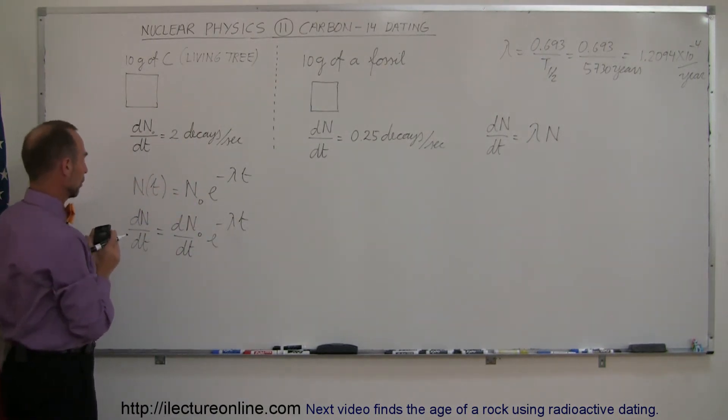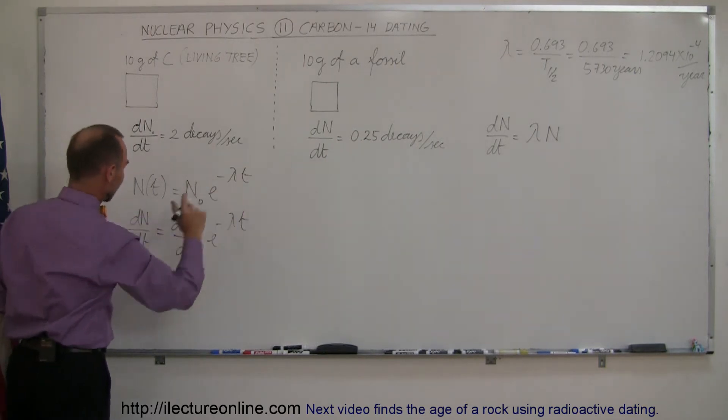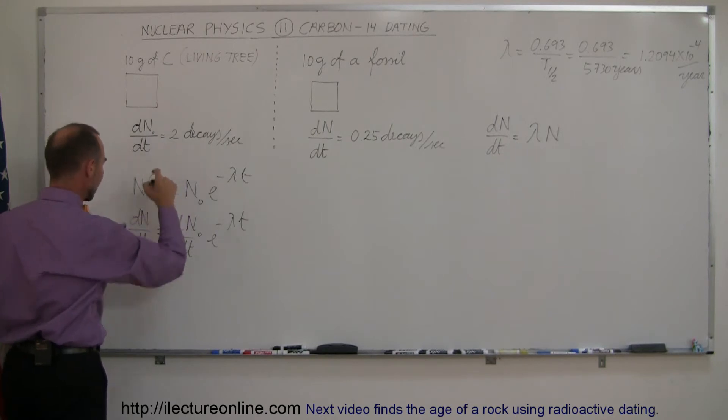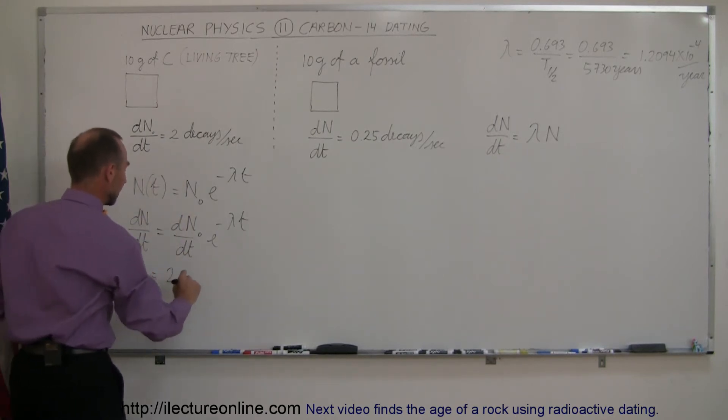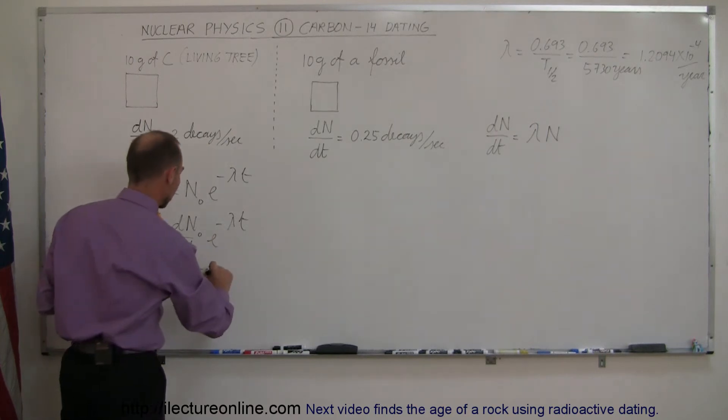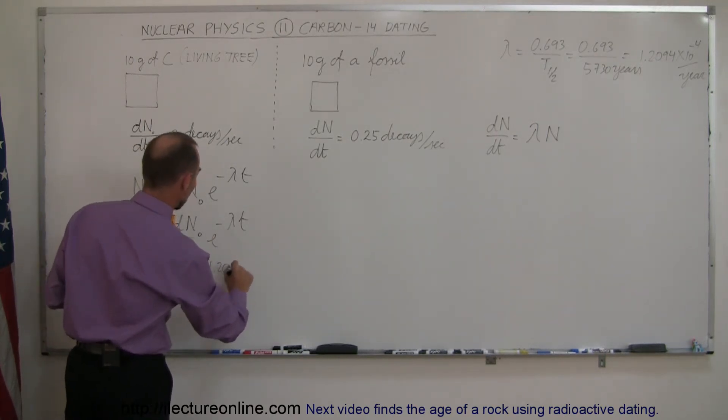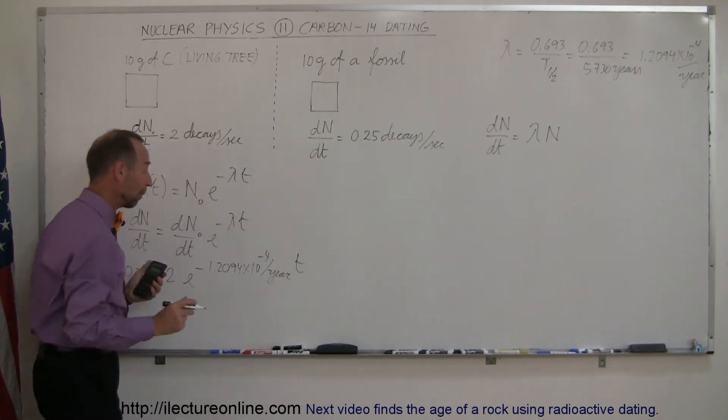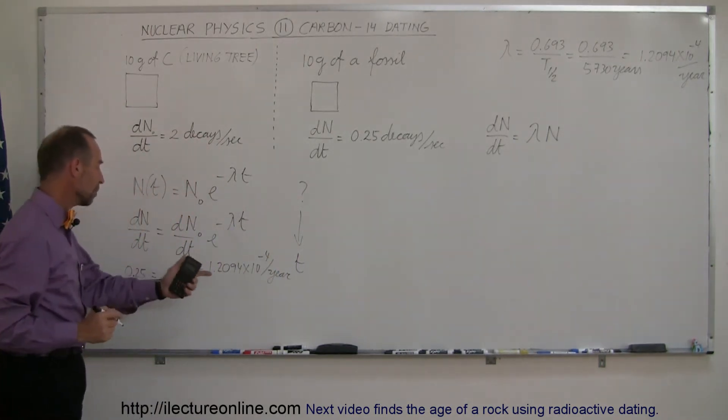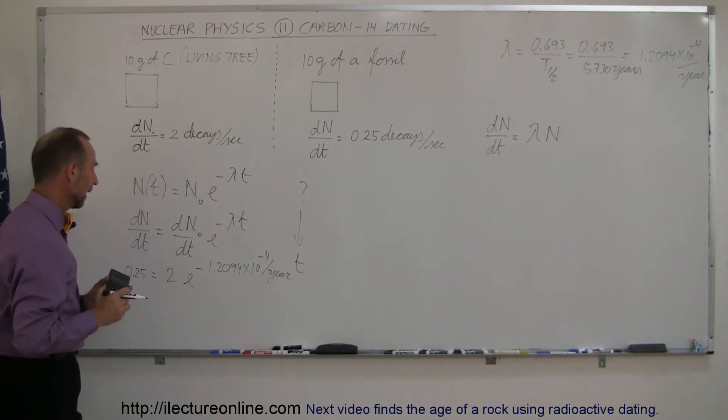Plug in the numbers here. Let's see what we get. So 0.25 equals the decay rate from a fresh sample, which is 2 times e to the minus 1.2094 times 10 to the minus 4 per year times t. And what we have to do now is figure out what the time elapsed is.